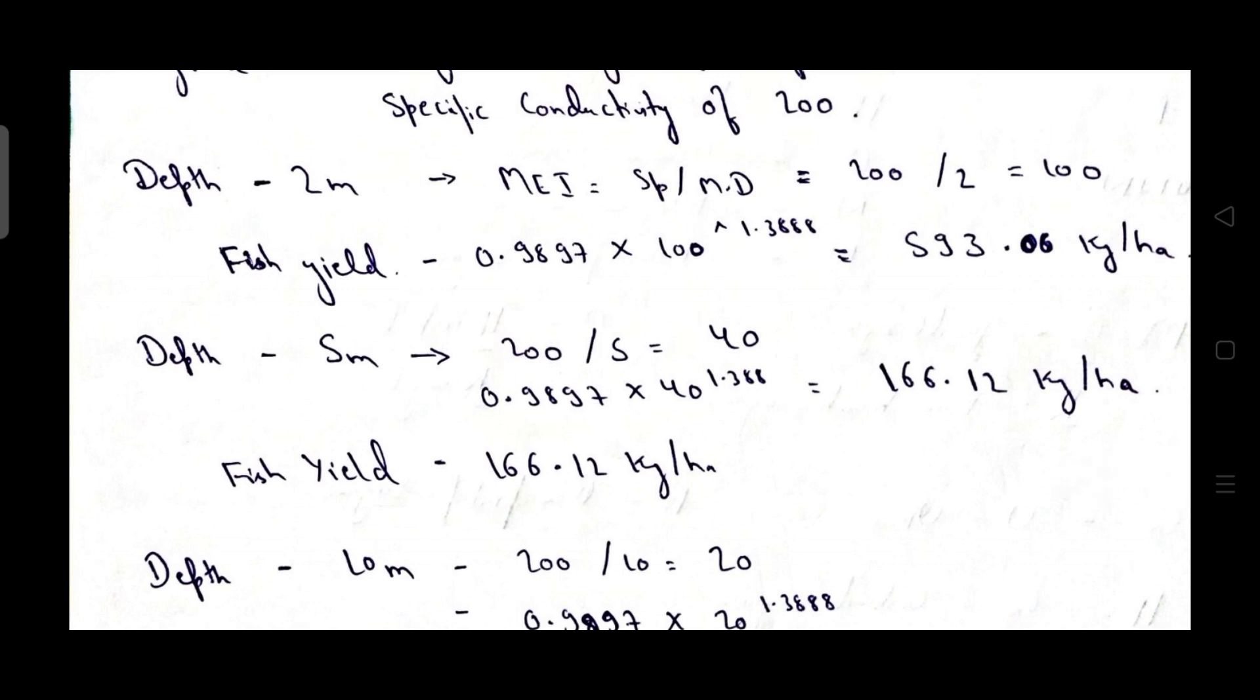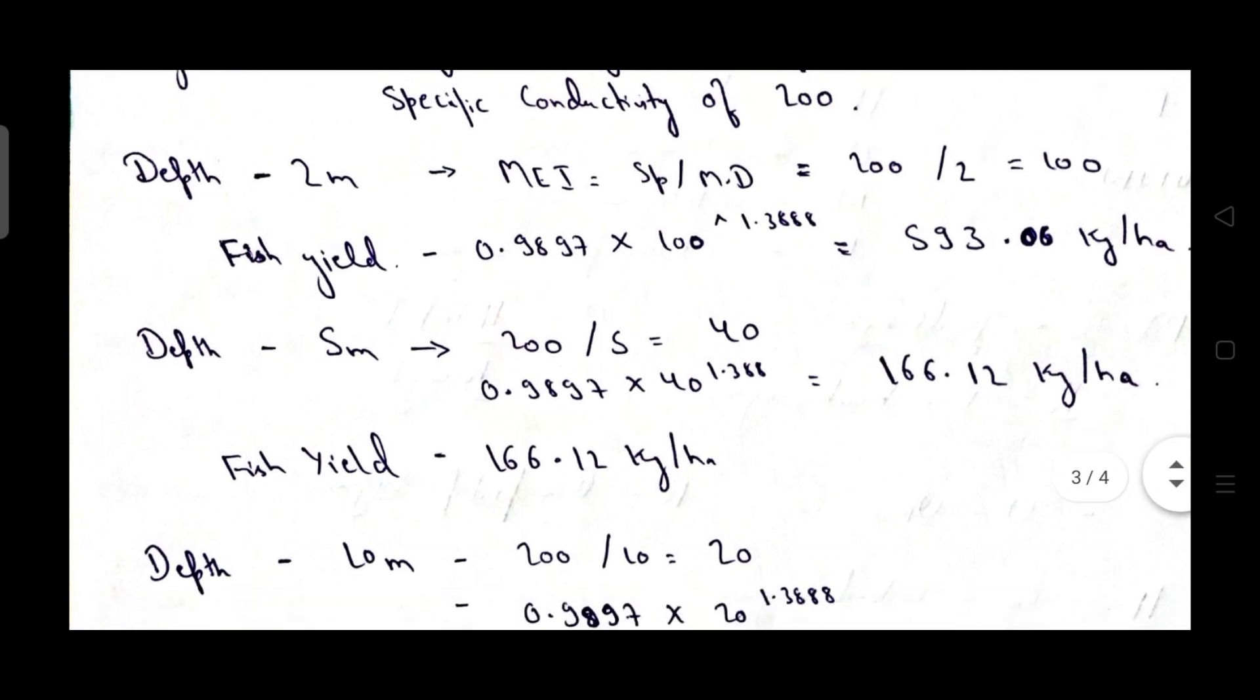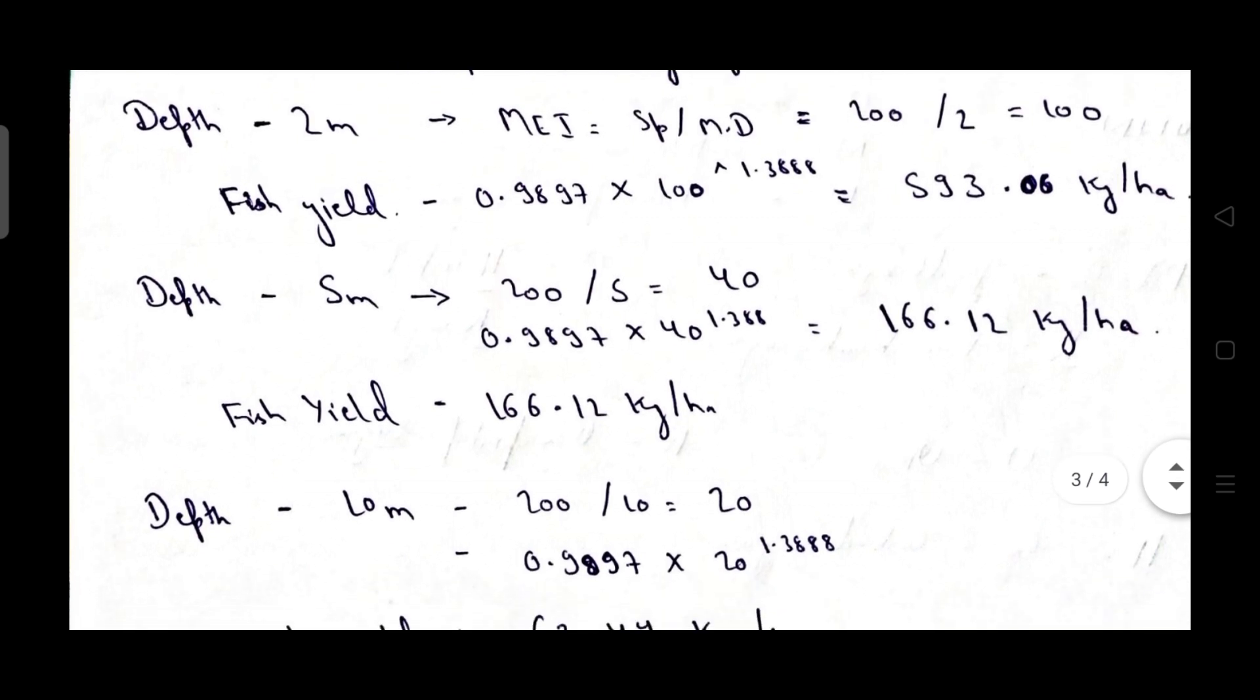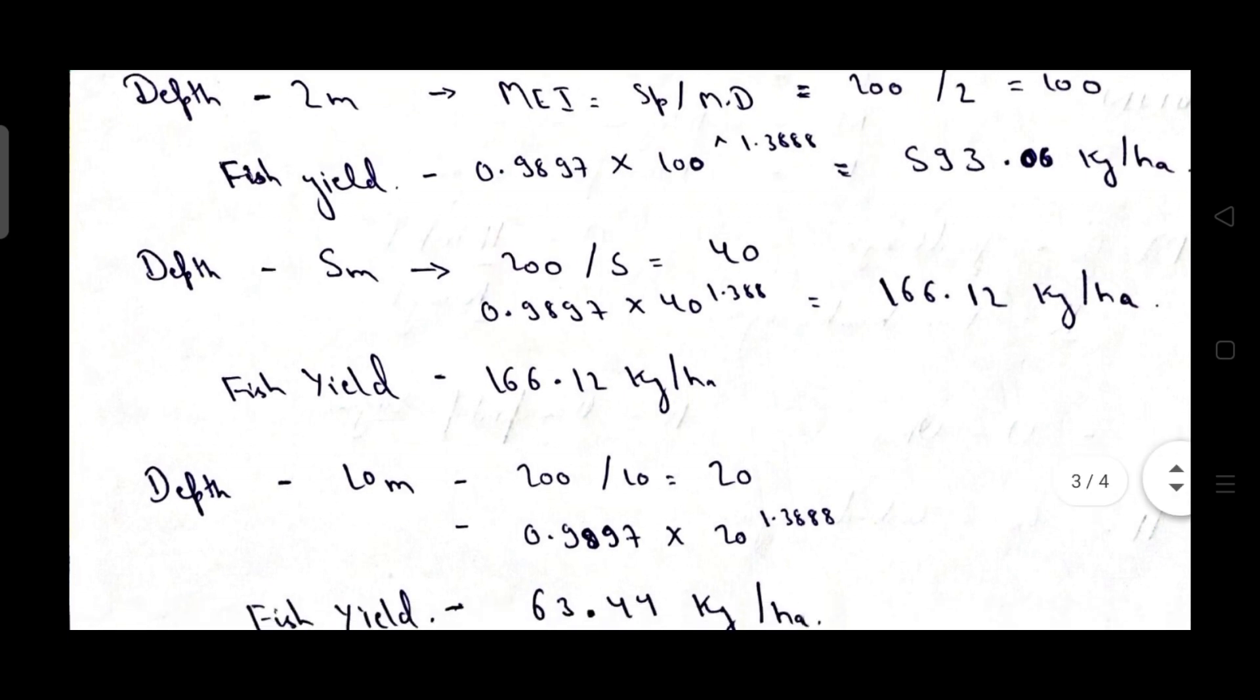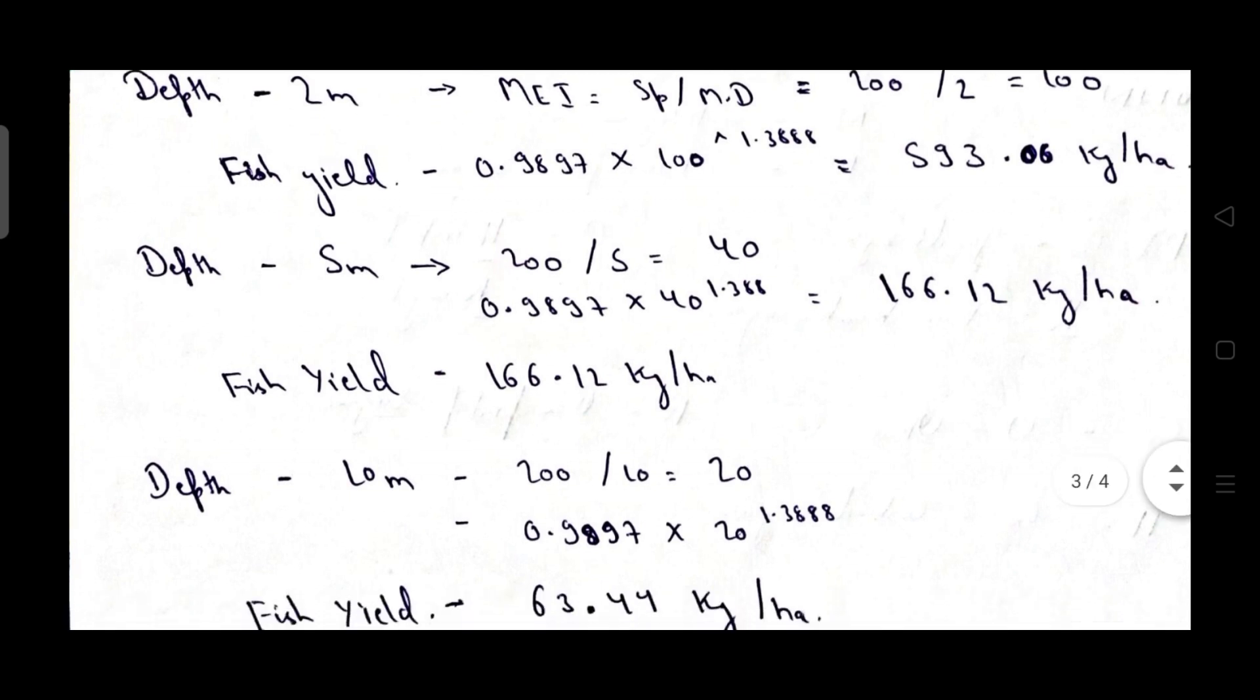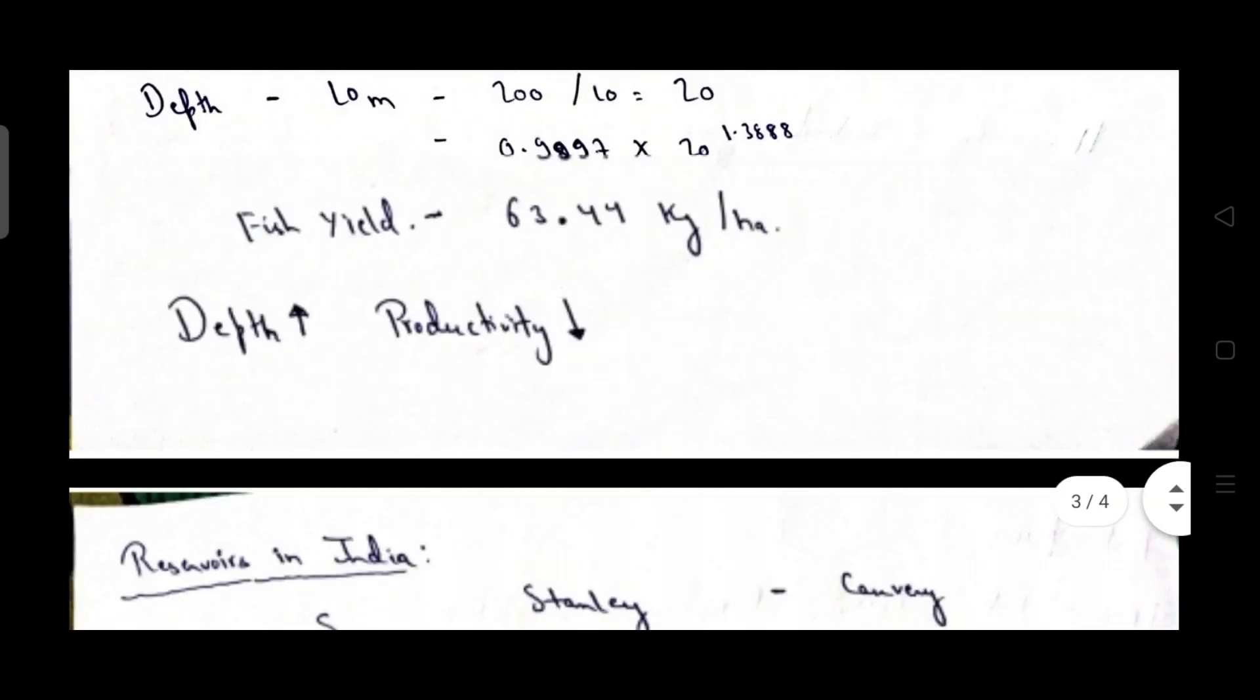First of all I have taken depth 2 meter and morphoedaphic index I have calculated by taking specific conductivity of 200. So morphoedaphic index is 200 upon mean depth 2 meter, so it will come 100. Then fish yield is equal to 0.9897 into 100 to the power of 1.388 so productivity is coming 593.06 kg per hectare. Then I have increased the depth to 5 meter and you can see by increasing the depth the productivity is going decreased. As we have studied earlier also the depth is inversely proportional to productivity, the more the depth will be the lesser the productivity will be and you can see by increasing the depth we are getting lower productivity in the reservoir section.